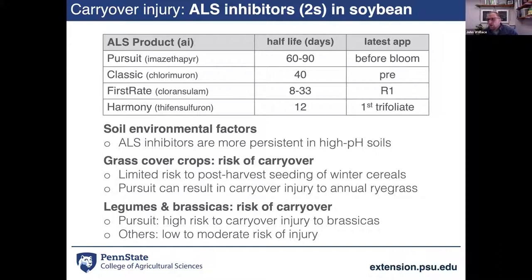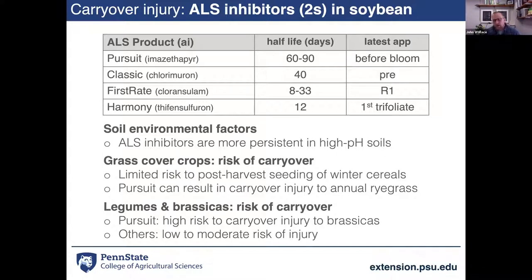Lots of group 2s are also used in soybeans — probably the most common would be Pursuit, Classic or FirstRate, and Harmony. If you don't have ALS-resistant marestail, you might be using those products. There's pretty limited risk of carryover to winter cereals. However, Pursuit should be recognized and treated with caution — it has a pretty long half-life, is active on some grasses, and Midwest data suggests carryover injury to annual ryegrass can occur. There's also pretty high risk of carryover injury to brassica cover crops from Pursuit.